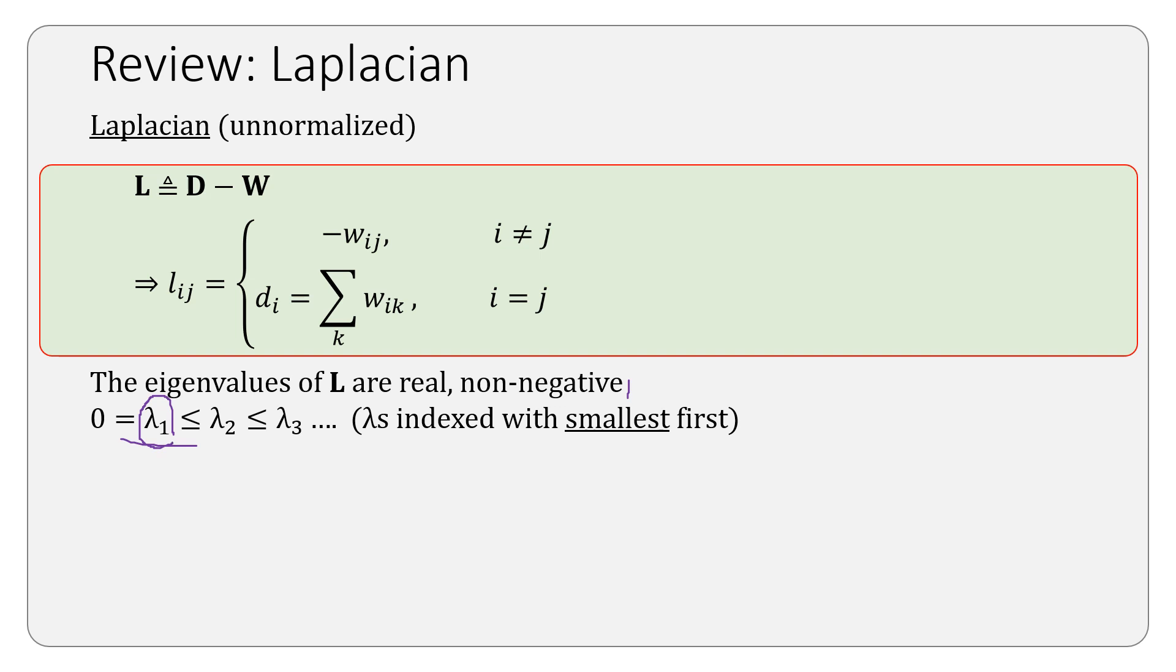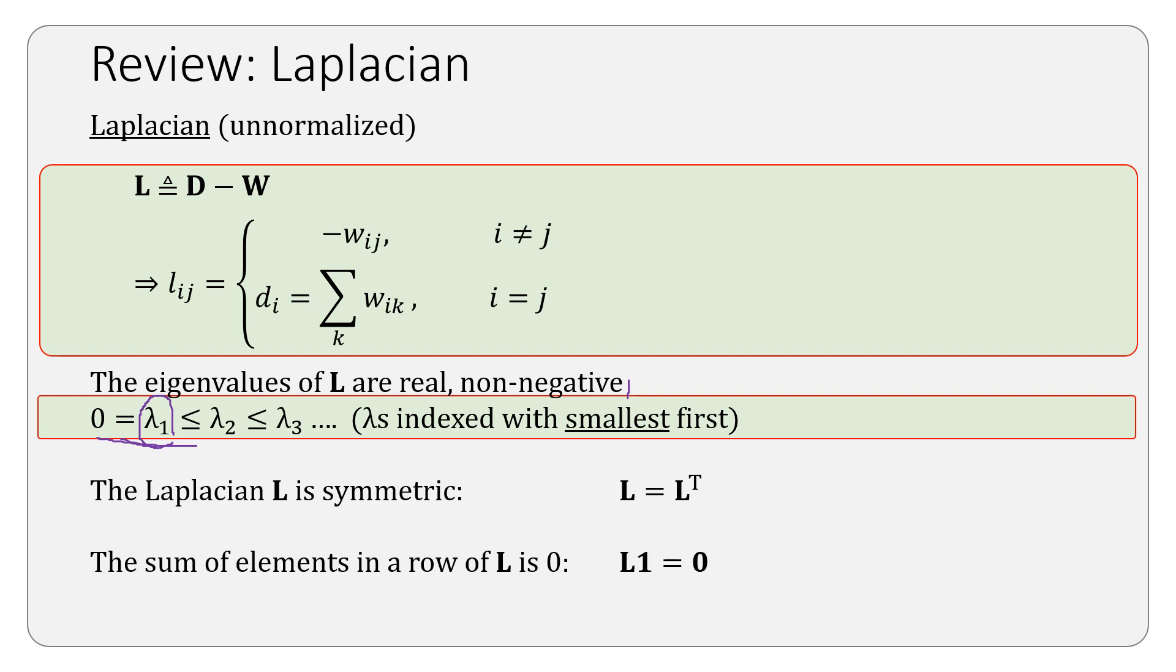We'll see today that lambda 1 is equal to 0 actually. We also saw that the Laplacian is symmetric and the sum of elements in each row adds up to 0, so L1 equals 0.